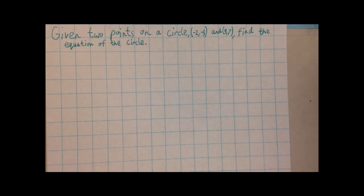In this video, we will be solving this problem. Given two points on a circle, negative 2, negative 3, and 4, 7, find the equation of the circle.